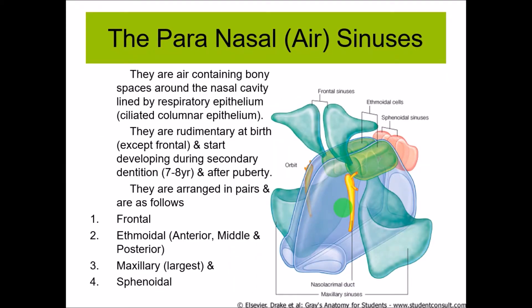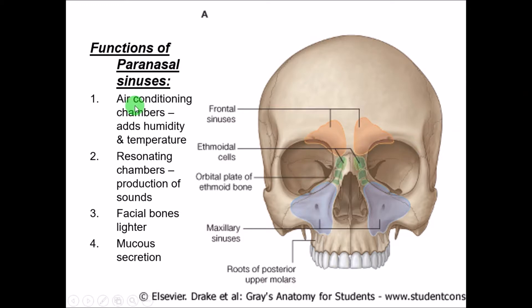Coming to the paranasal air sinuses: these are air-containing bony spaces around the nasal cavity — that is why they are called paranasal, meaning beside the nose. They are lined by respiratory epithelium, are very small or rudimentary at birth, but well developed at puberty. There are four important pairs: the frontal sinus, the maxillary sinus (the largest), the ethmoidal sinus, and the sphenoidal sinus, named after the bones in which they are present. Their functions include conditioning, humidifying, and regulating the temperature of air; acting as resonating chambers; lightening the facial bones; and secreting mucus.